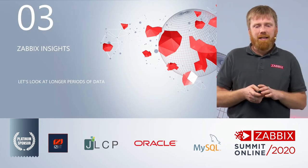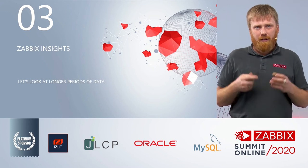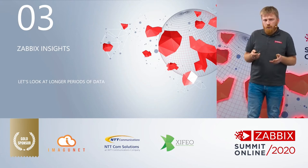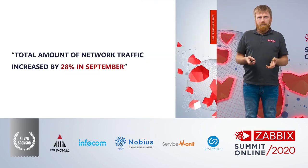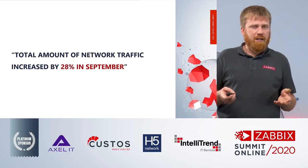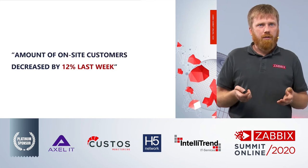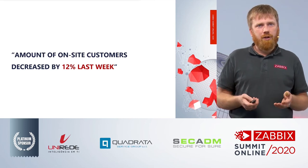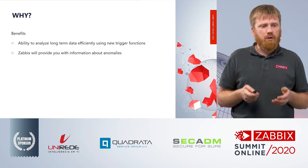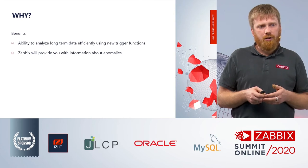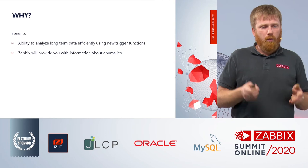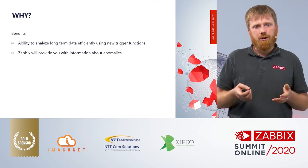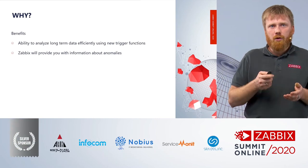Next, Zabbix Insights. We already have quite a lot of trend data — it's already there, but mostly it is only being used for graphs. Now we have a new feature which will allow us to look at longer periods of data in trends. For example, for some reason in September traffic increased, or for some reason this week the amount of on-site customers decreased by 12%. We can get this information out of Zabbix by using new trigger functions which work with trends. They will analyze long-term data using terms like weeks, months, or even years, allowing you to identify anomalies much easier. My colleague Alex will go into details about this.